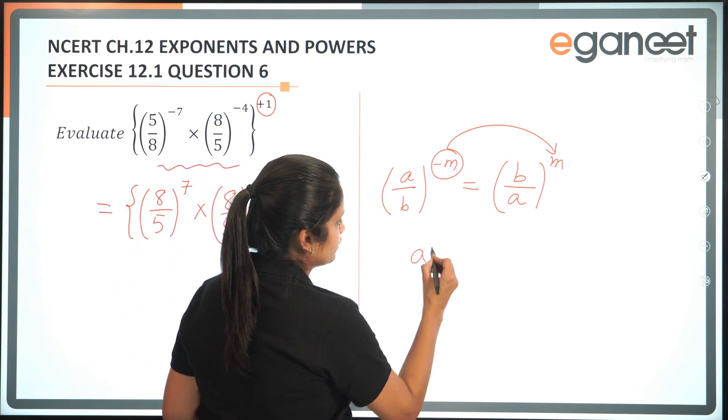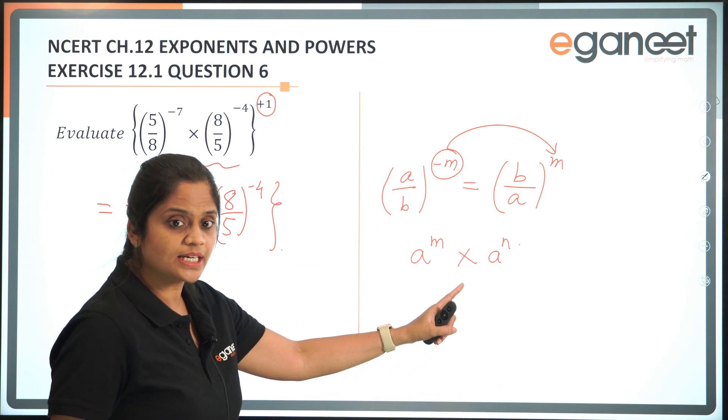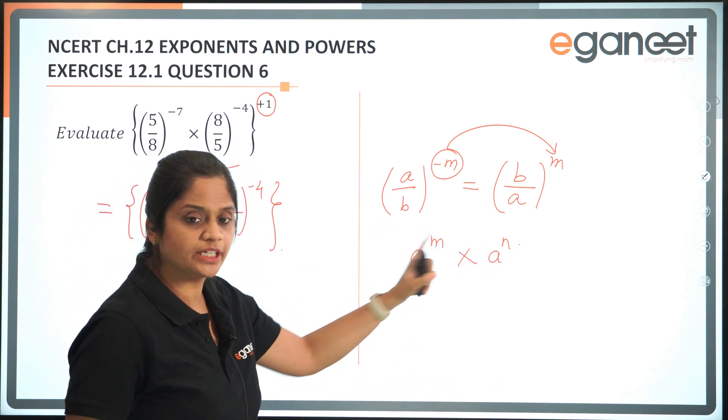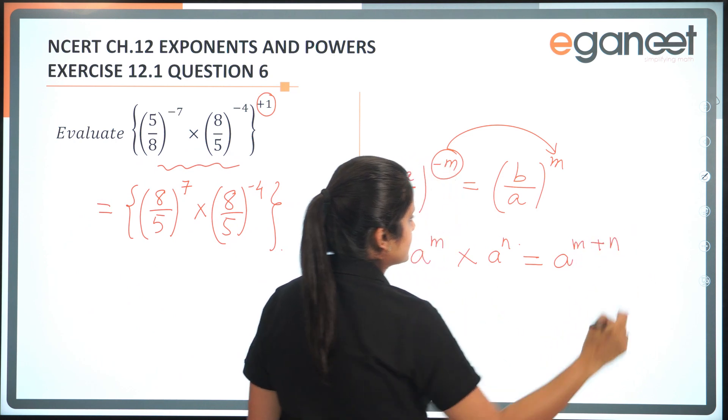You have something of the form a power m multiplied with a power n. That is, the bases are same but the exponents are different. So what do we do? We use the sum rule and we get a to the power of m plus n.